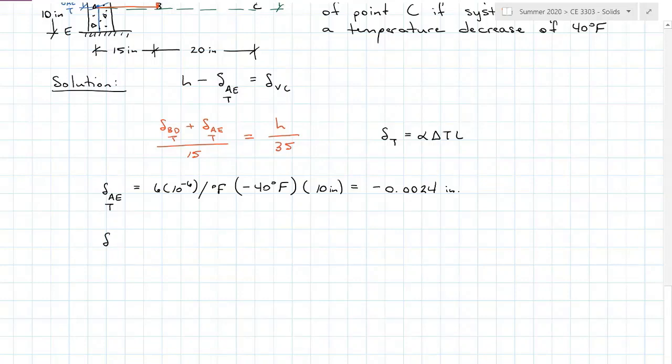The change in length of member BD due to temperature equals the coefficient of thermal expansion for magnesium alloy, which is 14.3 times 10 to the negative 6 per degrees Fahrenheit, times the temperature change negative 40 degrees Fahrenheit, times the original length of my member, which is 25 inches. That change in length will be a contraction of 0.0143 inches.